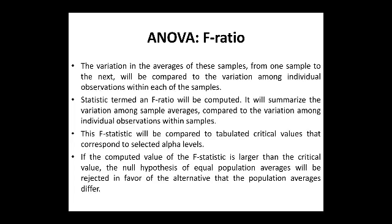ANOVA F-ratio: The variation in the averages of these samples from one sample to the next will be compared to the variation among individual observations within each of the samples. A statistic termed an F-ratio will be computed, summarizing the variation among sample averages compared to the variation among individual observations within samples. This F-statistic will be compared to tabulated critical values that correspond to the selected alpha value.